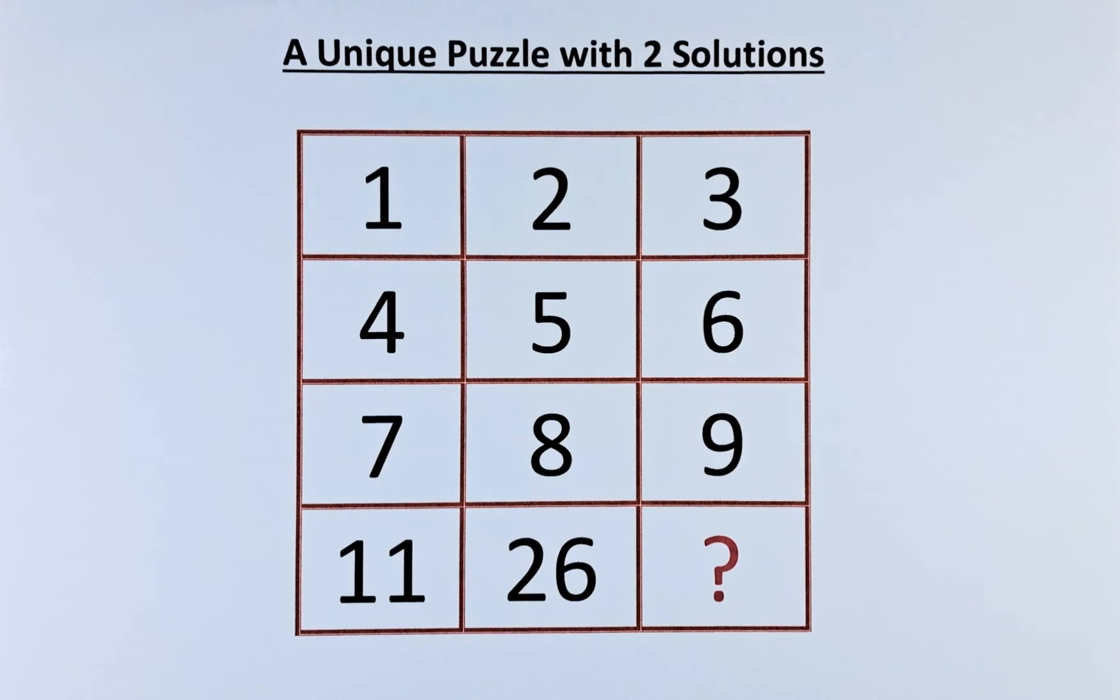The numbers in the puzzles are 1, 2, 3 in the first row, 4, 5, 6 in the second row, 7, 8, 9 in the third row, and 11, 26, and the question mark in the final row.